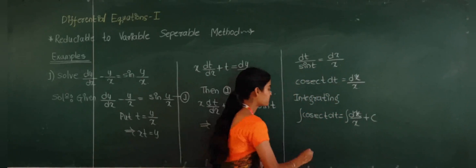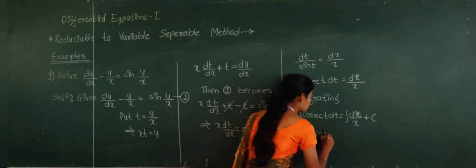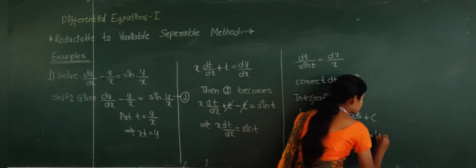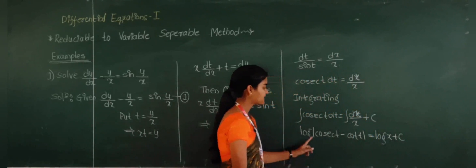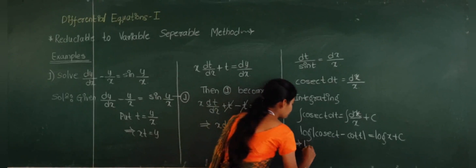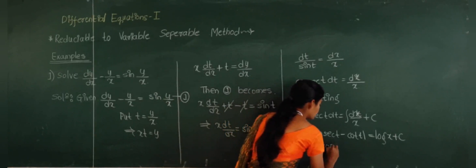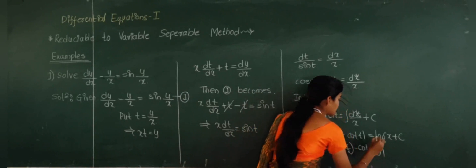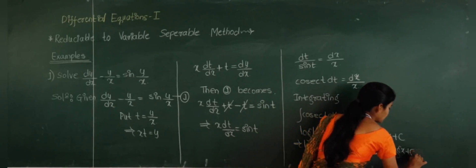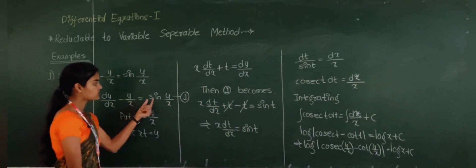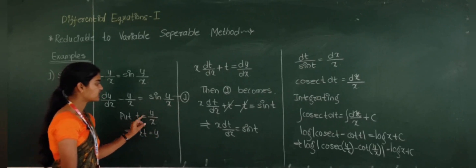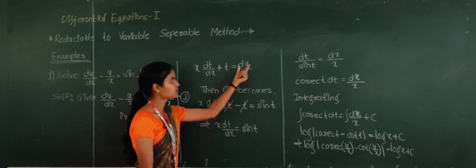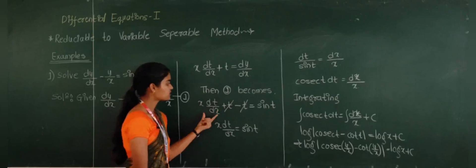The integration of cosec(T) is log|cosec T − cot T|, and the integration of dx/x is log x + C. At last, we substitute back the T value. So this gives: log|cosec(y/x) − cot(y/x)| = log x + C. First we took the given differential equation as equation number 1, then substituted T for the term we could not separate.